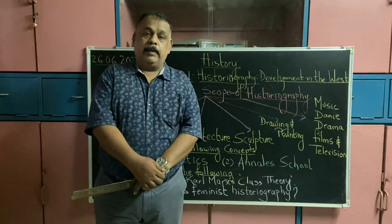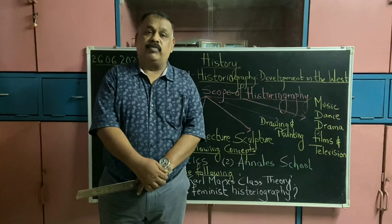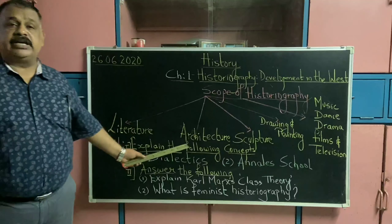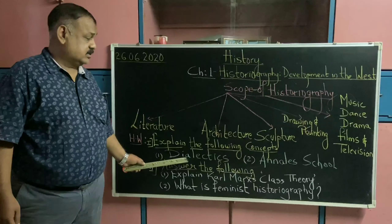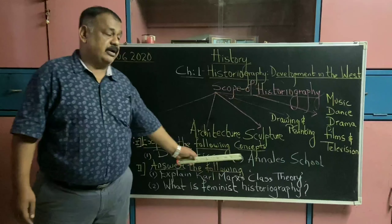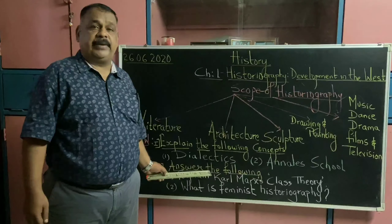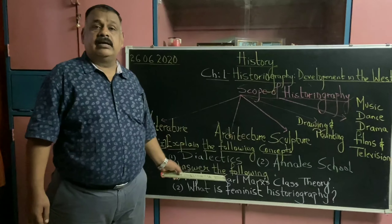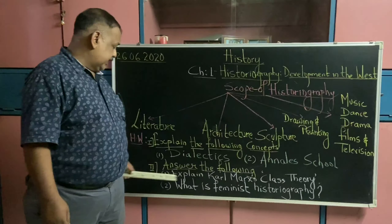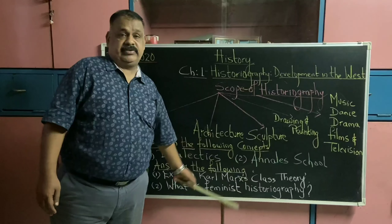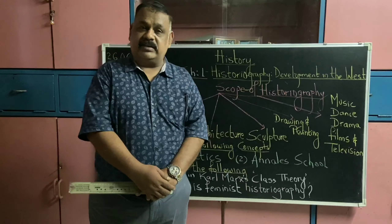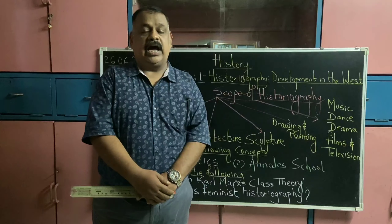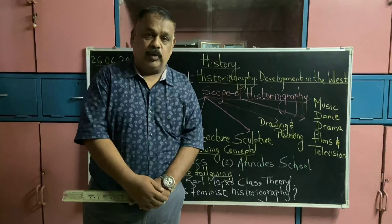I hope you enjoyed this lesson. Before I end, I would like to give you a small homework. First, explain the following concepts: dialectics and Annals School — found on page 15 of your textbook. Second, answer the following in brief: explain Karl Marx's class theory, and what is feminist historiography? Remember the three R's: read, review and recap. Thank you very much. God bless. Love you all. Bye.